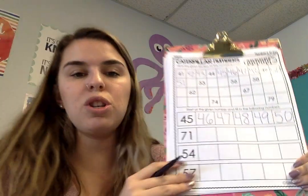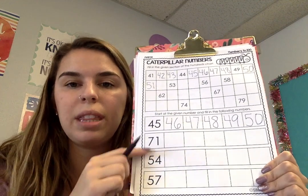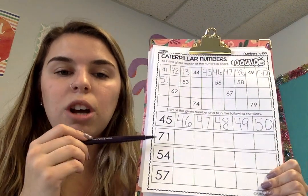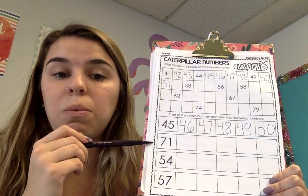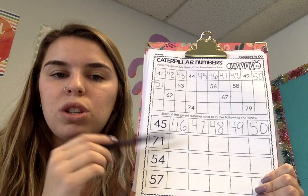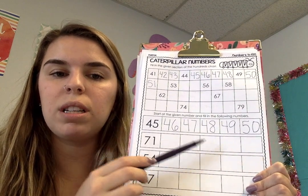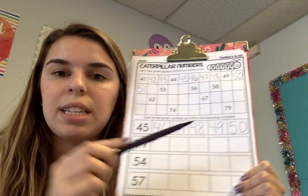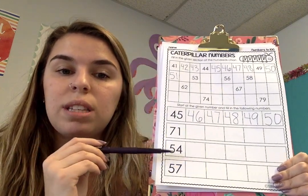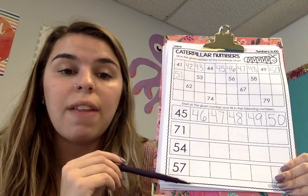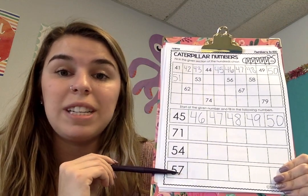I'll do the same thing with the other ones. On this one I'll start at 71 and go 71, 72, 73, 74, 75, 76. I'll do the same thing starting at 54 and then starting at 57.